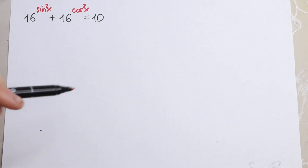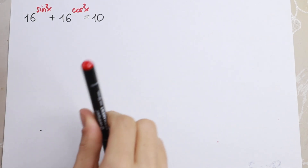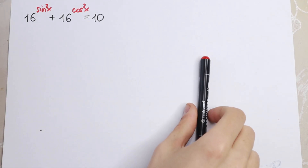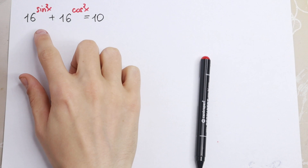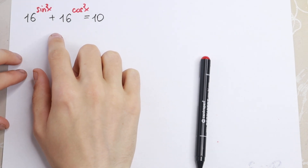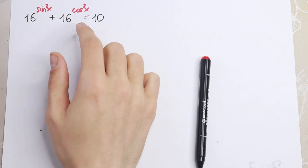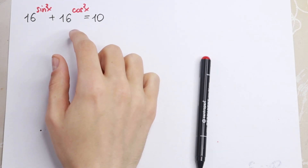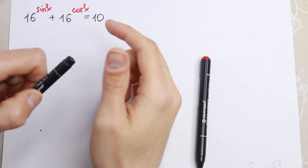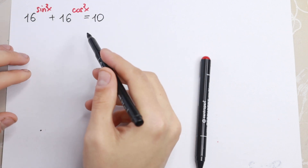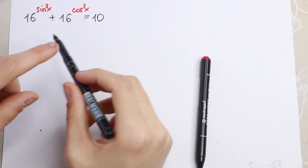Hello everyone. Today we have an interesting Olympiad algebra problem. We have 16 to the power sine squared x plus 16 to the power cosine squared x equal to 10, and we need to solve it.